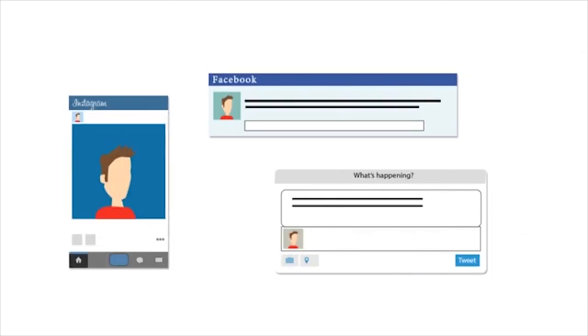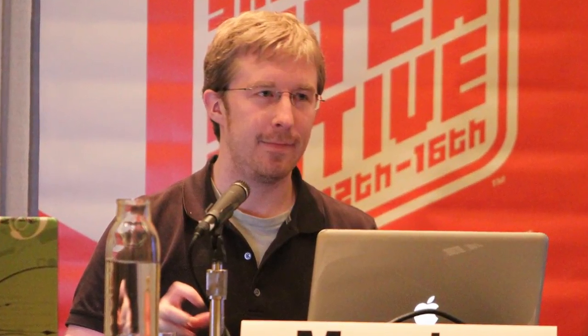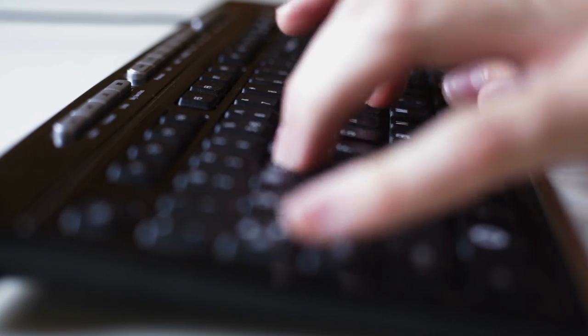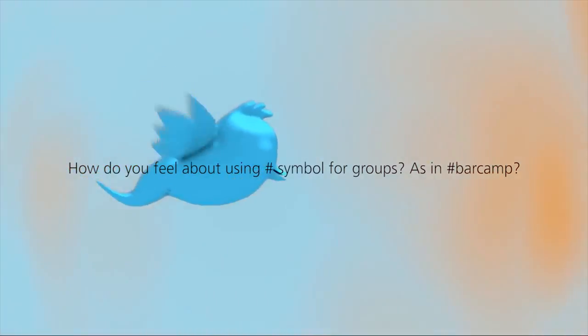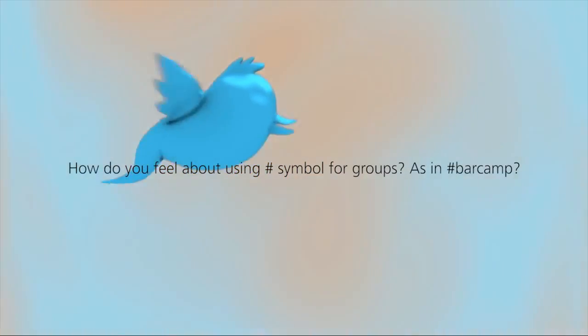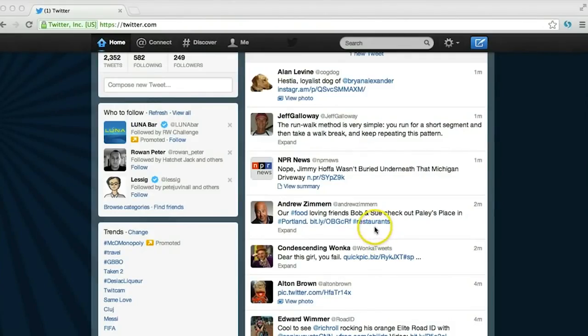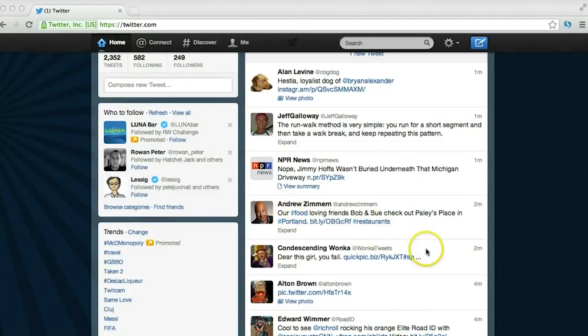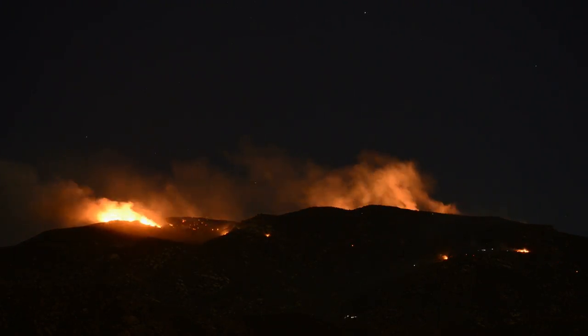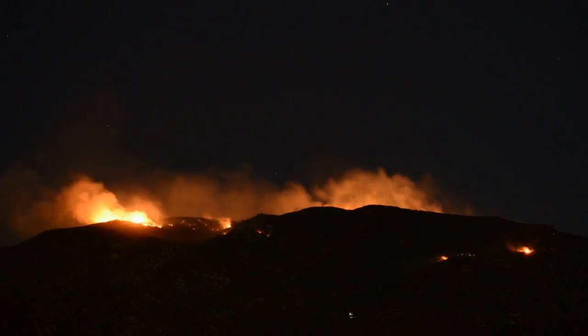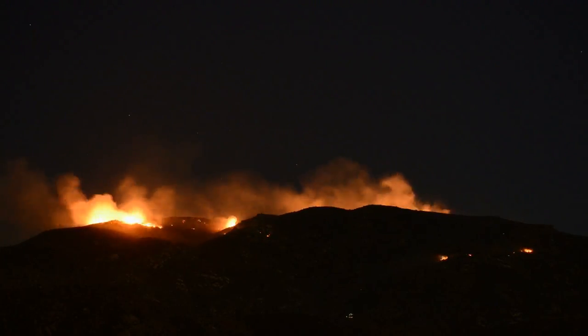By doing so, users can easily tag and search relevant posts to any type of topic. In August 23 of 2007, Messina posted the first hashtag on Twitter using his at Factory Joe username: "How do you feel about using the pound symbol for groups? As in, hashtag bar camp." Initially, the hashtag wasn't well received. But it took off when Twitter became an avenue for users to report on the San Diego forest fire of 2007.